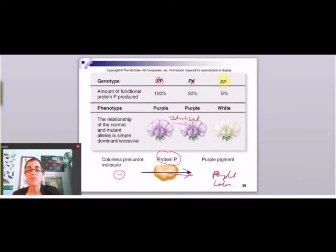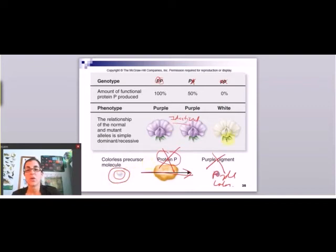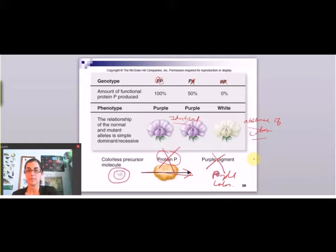The homozygous recessive now has two copies of the gene that doesn't work, so it makes 0% of the purple pigment. There's no purple pigment made, so only a colorless precursor molecule remains. In nature, white color is usually the absence of color — there's no white paint in this plant, there's just no color, so you see white. This is a case of complete dominance: 100% of the protein looks exactly the same color as 50% of the protein.